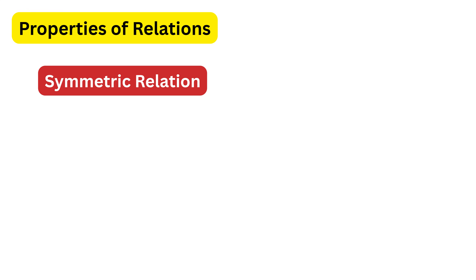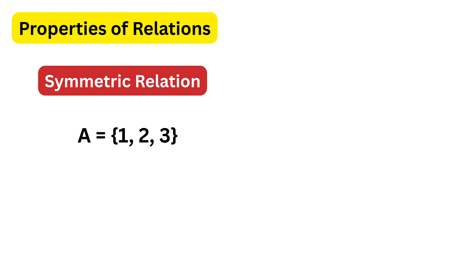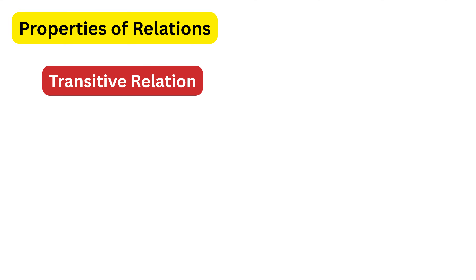A symmetric relation is a relation where if x is related to y, then y is automatically related to x. For example, with set A containing 1, 2, and 3, a relation with ordered pairs 1 comma 2, 2 comma 1, 2 comma 3, and 3 comma 2 is symmetric because every time a pair exists in one direction, the reverse pair also exists. Then we have a transitive relation, which is a little different: if x is related to y and y is related to z, then x must be related to z as well.